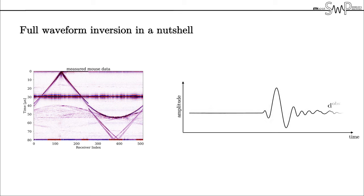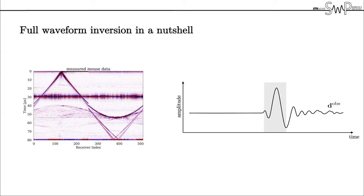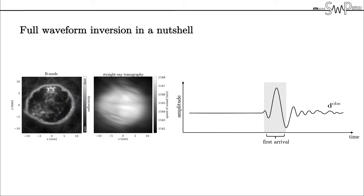To extract an image the signal information is most commonly limited to the first arriving pulses from which the time of flight or travel time of the wave from the emitting element to the receiving elements is calculated. With this kind of information we can reconstruct reflection or B-mode images as seen here on the left that qualitatively image the internal structure of the object or we can generate quantitative reconstructions of the speed of sound values with linearized methods as for instance straight ray tomography seen here on the right.